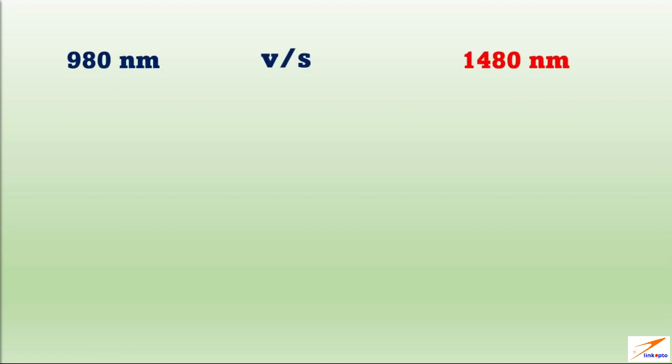The major differences between using these wavelengths are: In 980 nanometers we'll get low gain around 10 to 15 dB. With 1480 nanometers we'll get high gain around 20 to 30 dB.